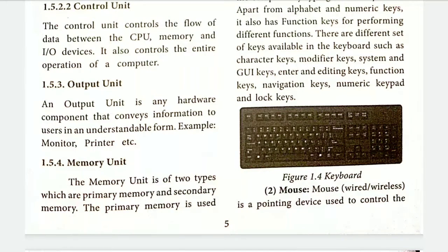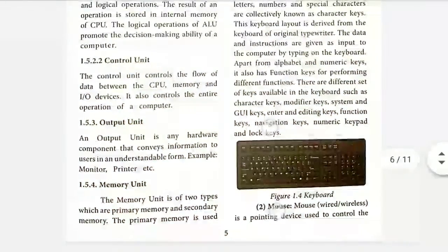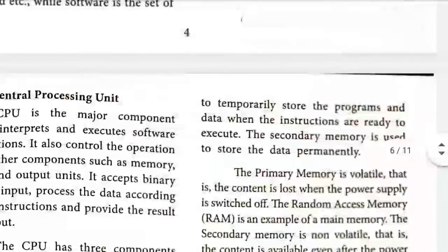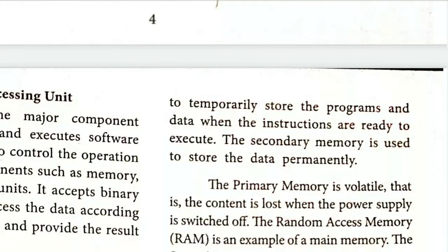The next thing is the memory unit. There are two types of memory: main memory and secondary memory. Main memory is also known as primary memory. Primary memory is temporary storage, also called volatile memory. The content stored in primary memory will be erased or deleted when the power goes off. Secondary memory is not like primary memory — it permanently stores all the information that the CPU is using.